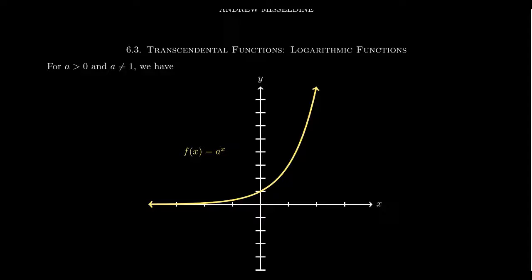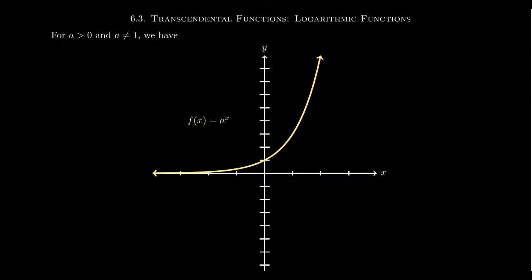What you can see on the screen right now is the graph of a typical exponential function. Assuming that the base a is both positive and not equal to 1, we can guarantee that the exponential function will be 1 to 1. Since it's 1 to 1, that means it has an inverse function. As we try to graph this, remember, if we take the line y equals x, the graph of the inverse function is the reflection of our function across this line. For example, the exponential function goes to the point 0, 1.